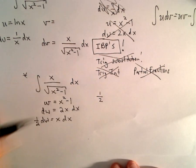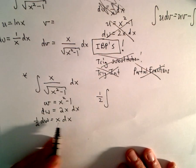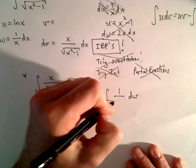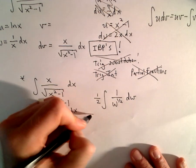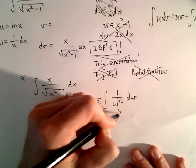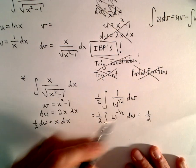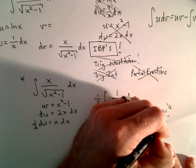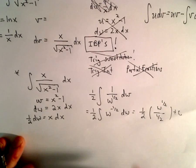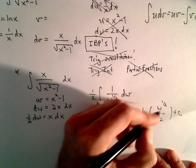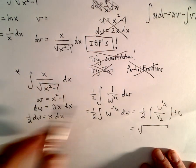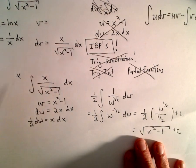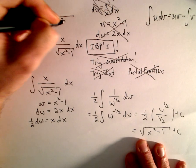Finding the antiderivative: I pull the 1/2 out front, replace x dx with (1/2)dw, and the denominator becomes √w, which is w^(1/2). Rewriting as w^(-1/2) and integrating: add 1 to the exponent to get w^(1/2), divided by 1/2. Since 1/2 divided by 1/2 equals 1, we get √w. Since w = x² - 1, our antiderivative is √(x²-1). So v = √(x²-1).